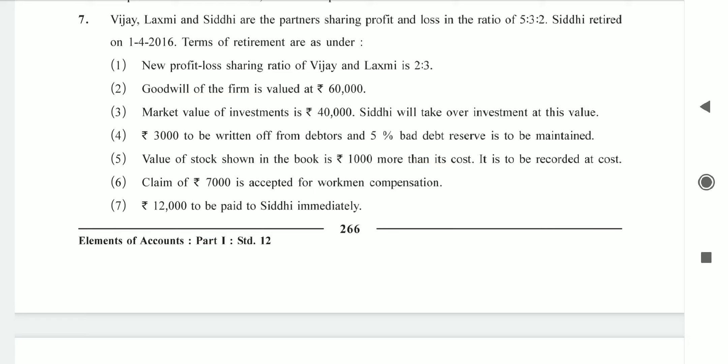New ratio is 2/5, old ratio is 5/10. So 2/5 minus 5/10 — LCM is 10 — gives 4/10 minus 5/10 = minus 1/10. This means Vijayalakshman has sacrificed. For Lakshmi: 3/5 minus 3/10 = 6/10 minus 3/10 = 3/10. So here only Lakshmi has gained.